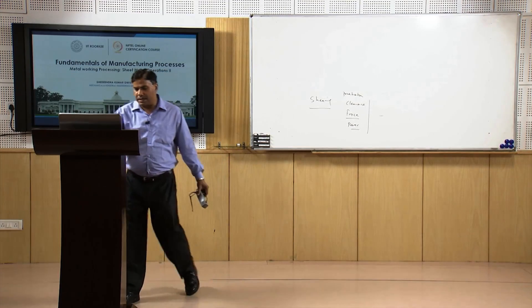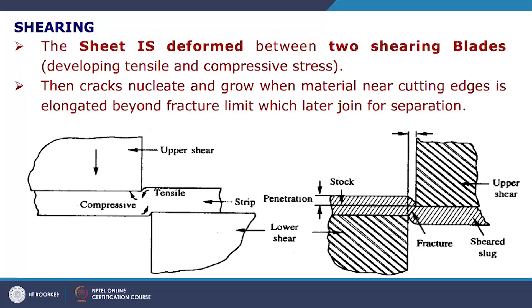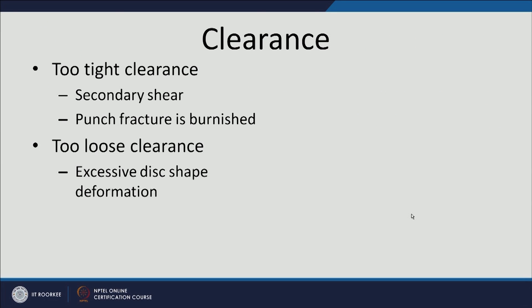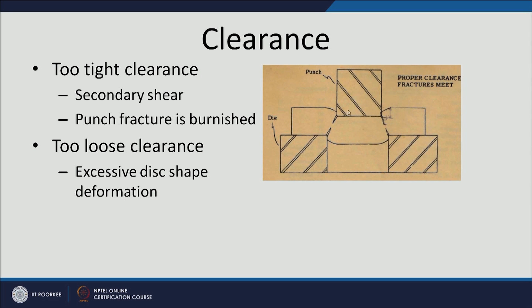We will go through these slides regarding the effect of clearance. In shearing we use one die and punch — there is an upper blade and a lower blade. When the punch moves down, strain is generated into the sheet metal and when it crosses a threshold, cracks nucleate on both sides. Their propagation leads to shearing and separation of the material. When the clearance is optimum, the cracks propagate from both the lower side of the punch and the upper side of the die, and they meet at the center.